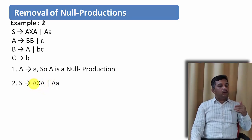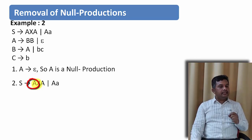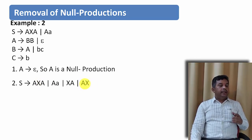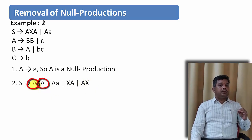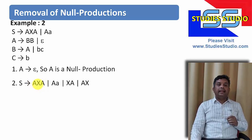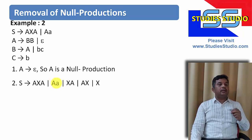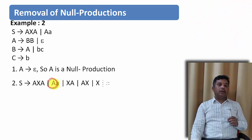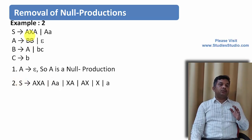For S derives AXA, we write it including A and also excluding A in each position. Excluding the first A gives XA; excluding the second A gives AX; excluding both A's gives just X. For S derives AA, substituting epsilon for one A gives a (terminal); so from this production we get: S derives AXA or XA or AX or X or AA or A.